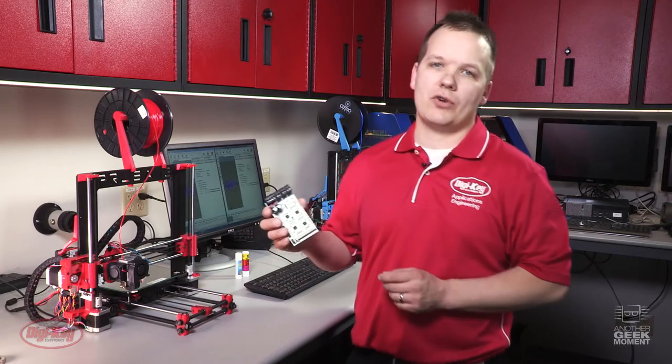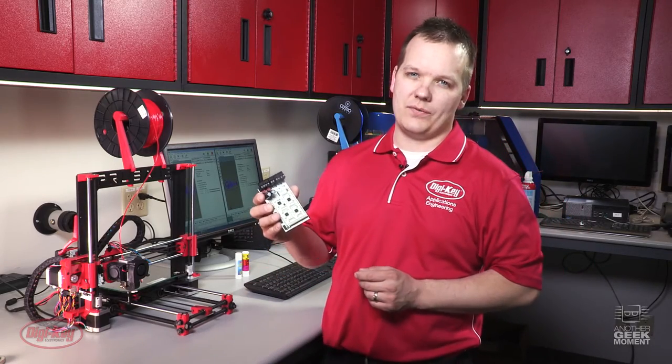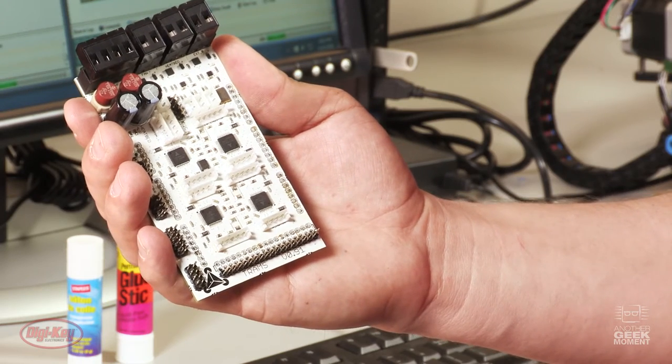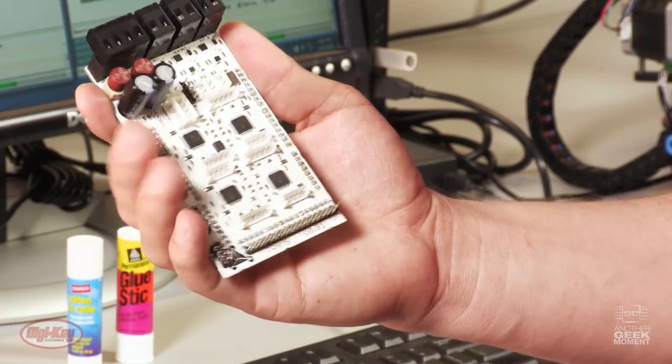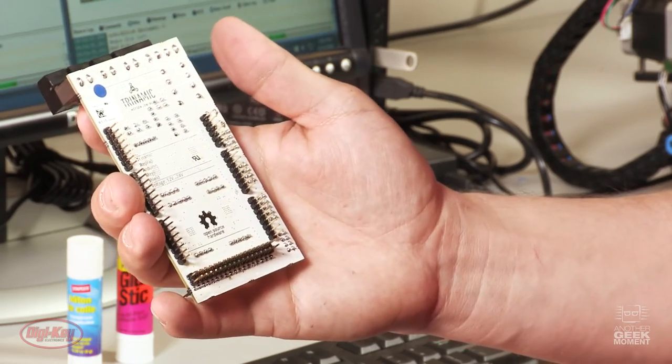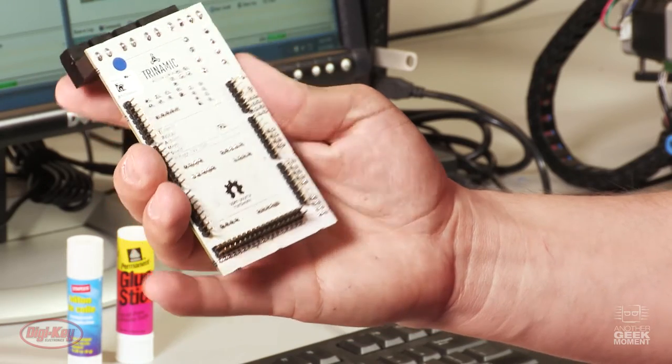The TRAMS stands for Trinamic RepRap Arduino Mega Shield. With the integrated RAM controller of the TRAMS board, it allows for higher microstep resolution, higher speed, and much less noise than the standard RAMS board we're using over there.